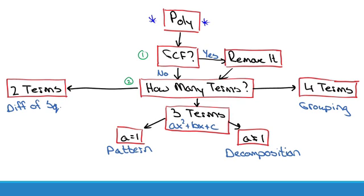Next question, how many terms? And then once you know how many terms, then you know the method. If there's two terms, we'll use difference of squares. If there is four terms, we'll use grouping. If there's three terms, and they're of the form ax squared plus bx plus c, then we check out, is the a value 1 or not?